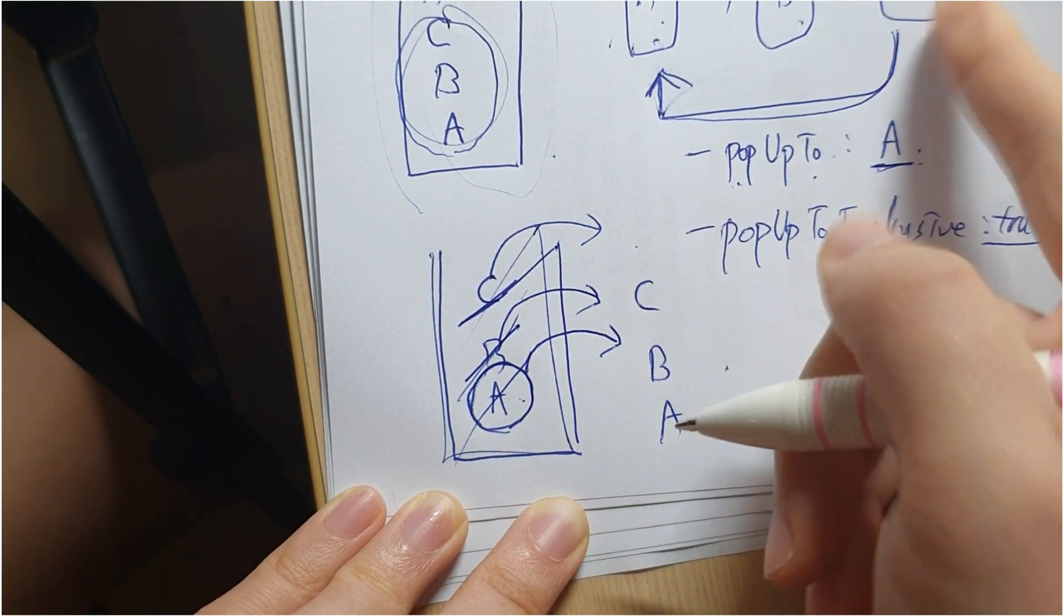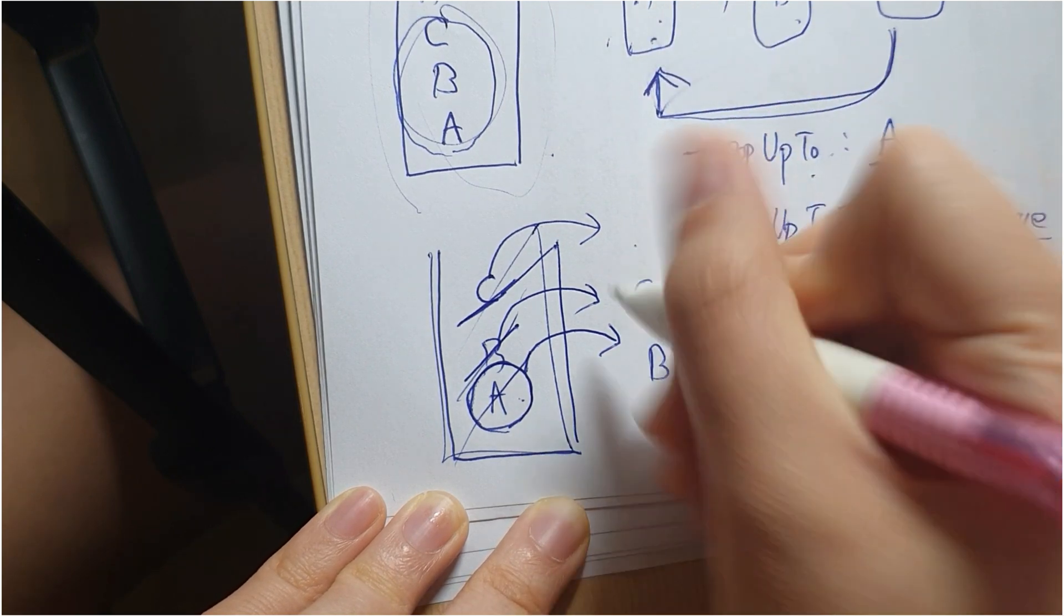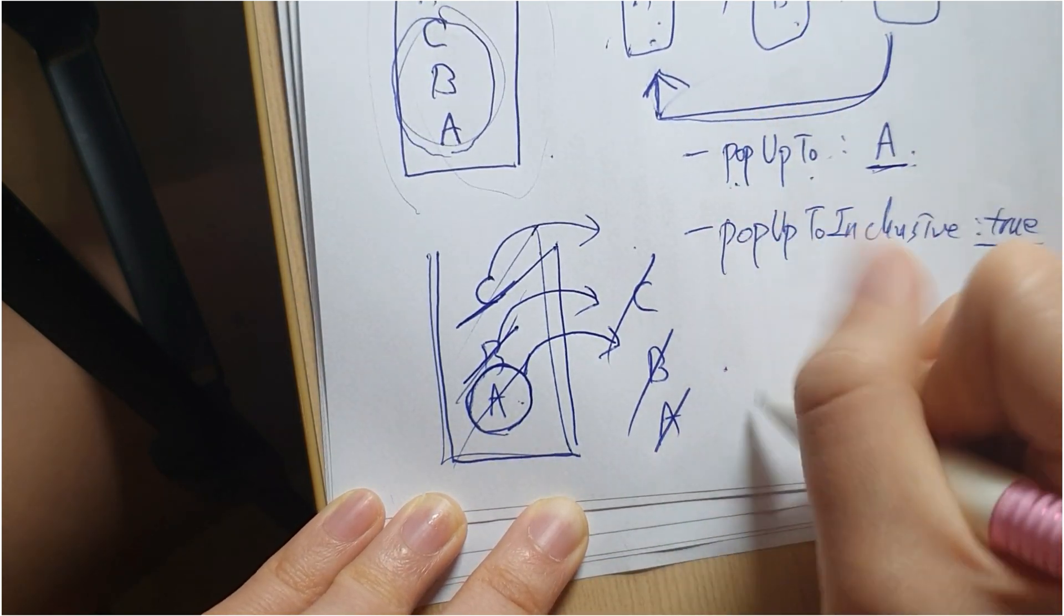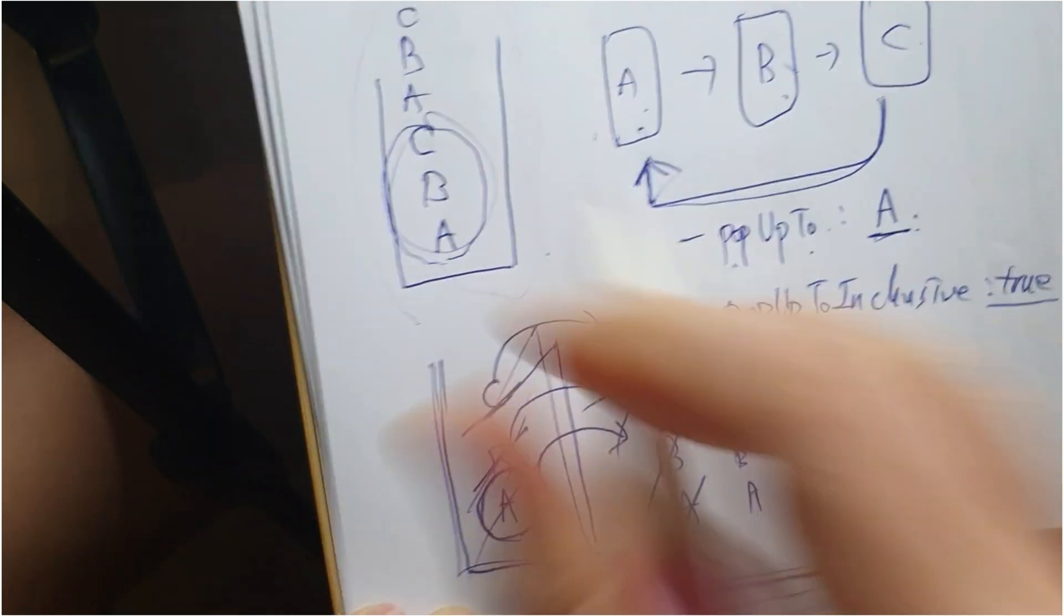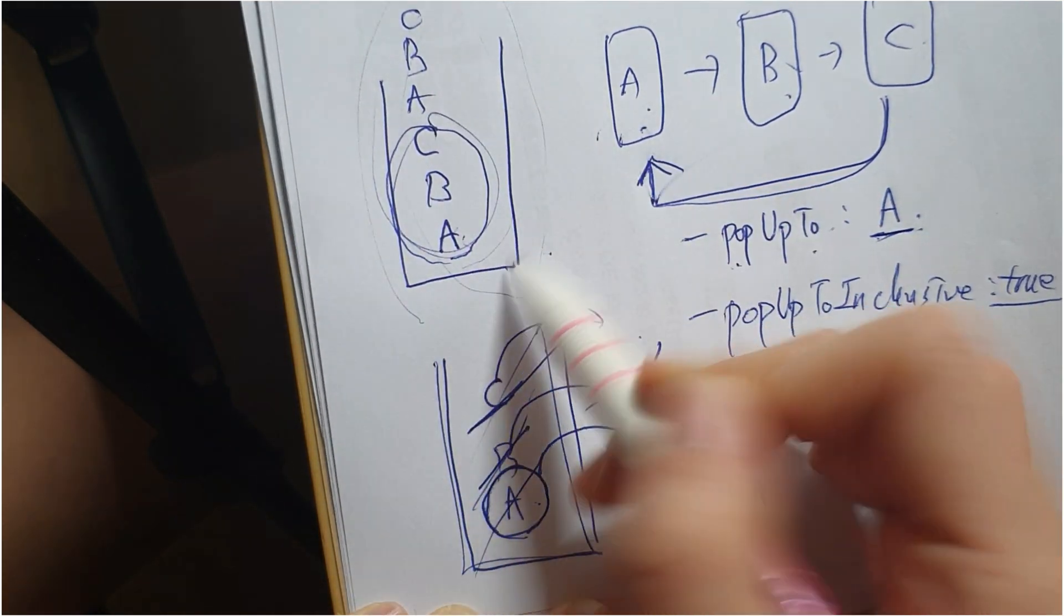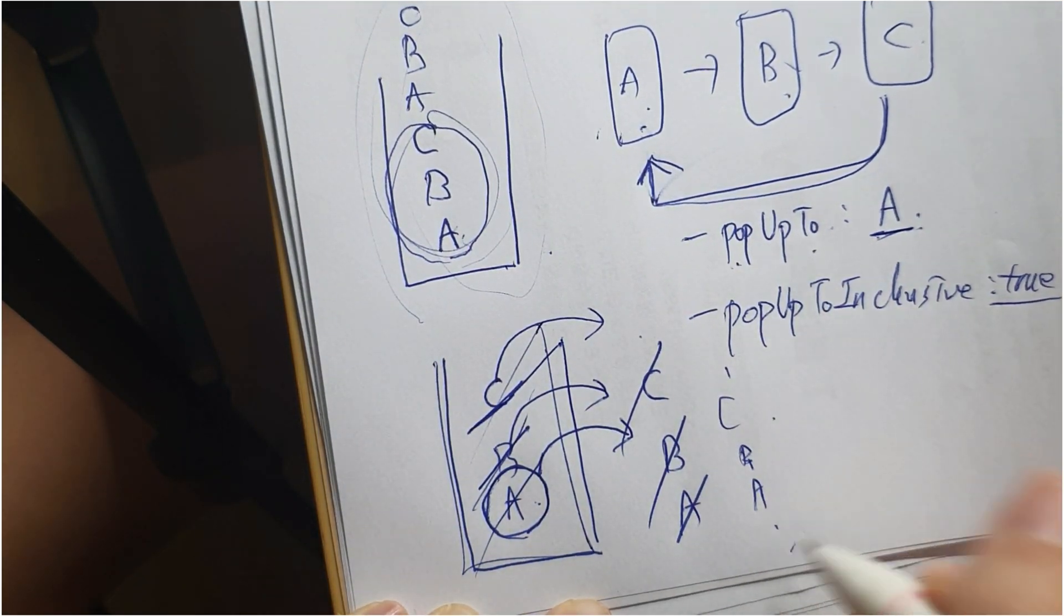And if you go to C to A, you're going to clear all the thing again - A, B, C. So it's not going to be stacked repeatedly, but A, B, C, clear, and A, B, C like that. But what if we pop up to inclusive false?